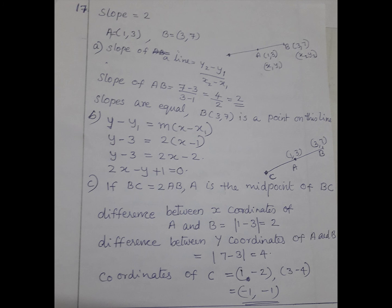17th answer: slope 2, point A(1,3), B(3,7). B is on the line. Slope of line is y2 minus y1 by x2 minus x1, 7 minus 3 by 3 minus 1, 4 by 2 equals 2. Equation y minus y1 equals m into x minus x1, y minus 3 equals 2 into x minus 1. Equation 2x minus y plus 1 equals 0.